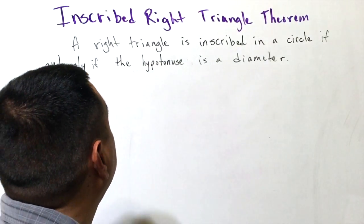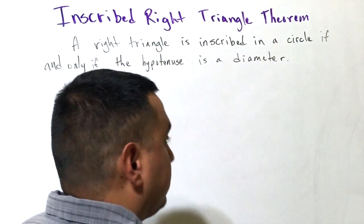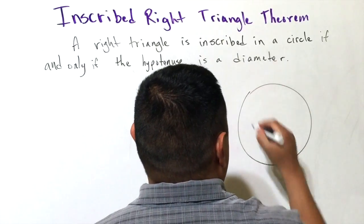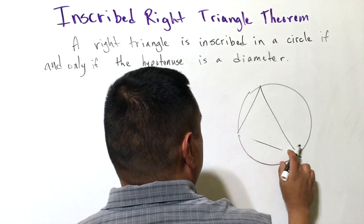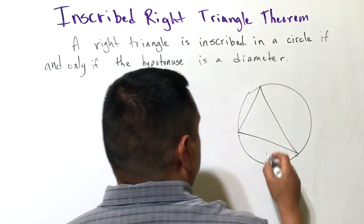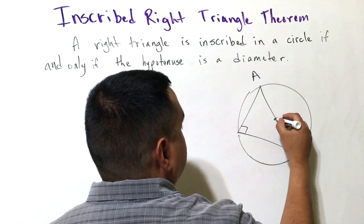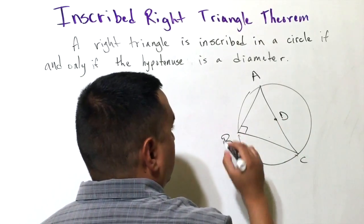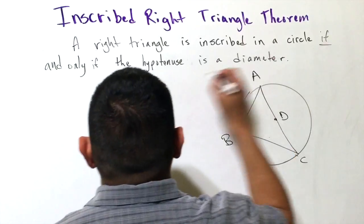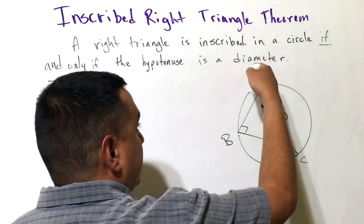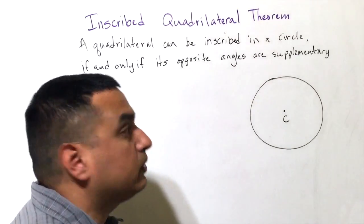Next is the Inscribed Right Triangle Theorem, which says a right triangle is inscribed in a circle if and only if the hypotenuse is the diameter. If you're told a triangle is a right triangle, then the hypotenuse must be a diameter. Because of the 'if and only if,' you can go backwards: if AC is a diameter, then the triangle must be a right triangle.